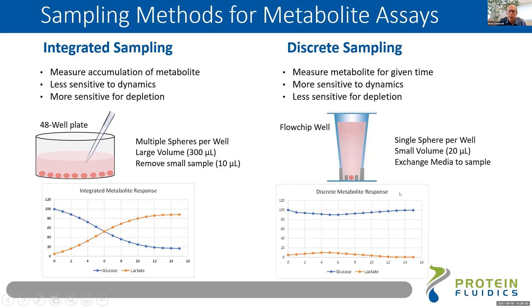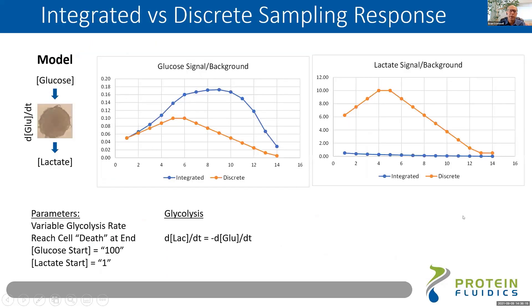But if you're looking for a secreted factor such as lactate, you're doing what we call a flop-in experiment — you're looking for an increase above zero background or very minimal background. So if you model this as signal over background, for glucose being depleted, you can measure that in either integrated or discrete mode. But for secreted factors like lactate, which is produced by glycolysis, you get a much higher signal-to-background ratio with discrete sampling.